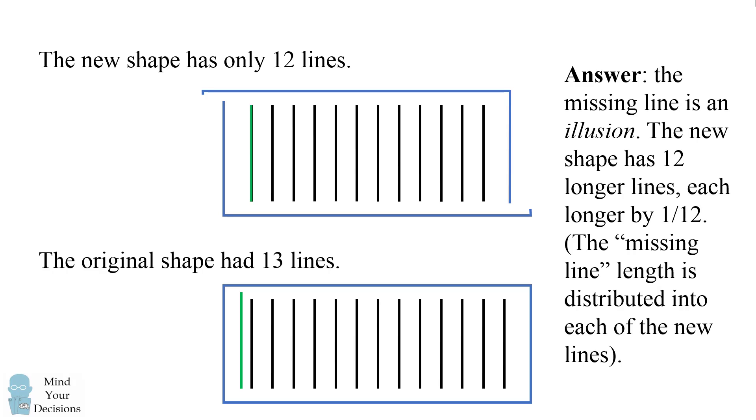So this illusion works because you have so many lines, and you're only changing the length by very little. If you were to do this with only four lines, you'd actually be able to see that the lines are longer. But that's the reason this illusion works.